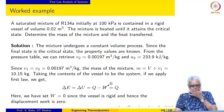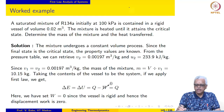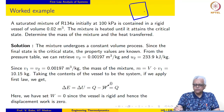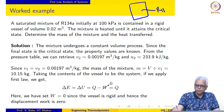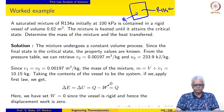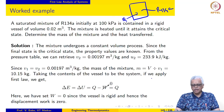Let us start with the first example. Here we have a fixed vessel which contains a saturated mixture of R134A initially at 100 kilopascal. The volume of the vessel is also given. We now supply heat to the vessel until the contents reach the critical state. We are asked to determine the mass of the mixture and the heat transferred to the contents of the vessel.